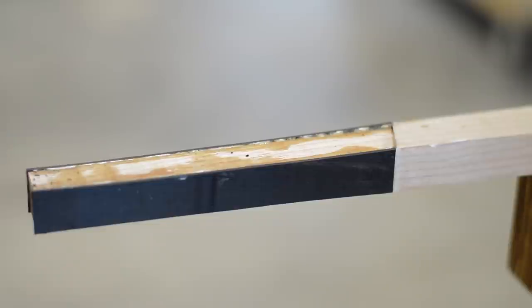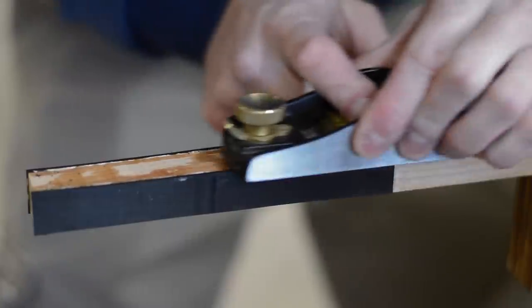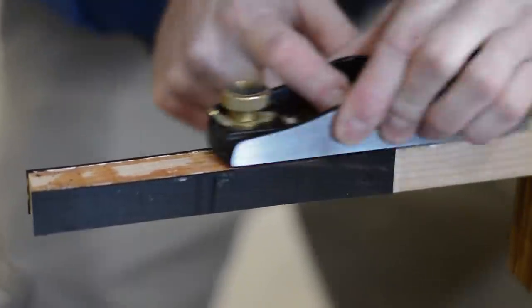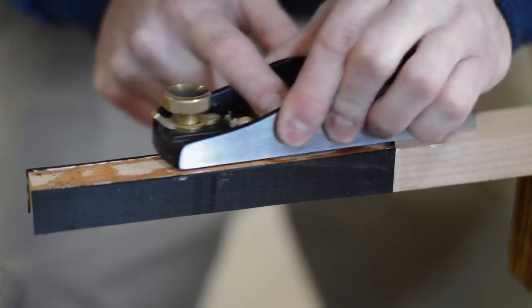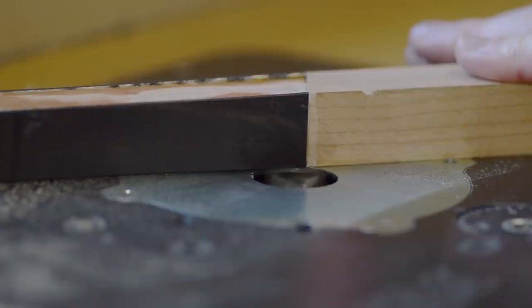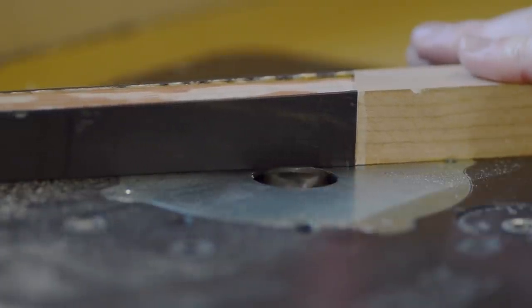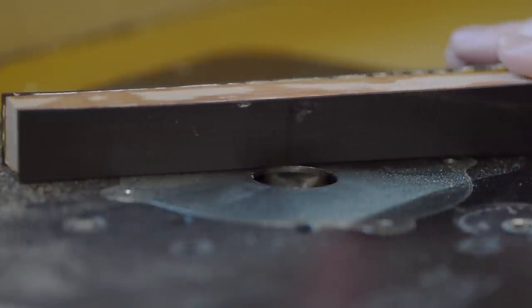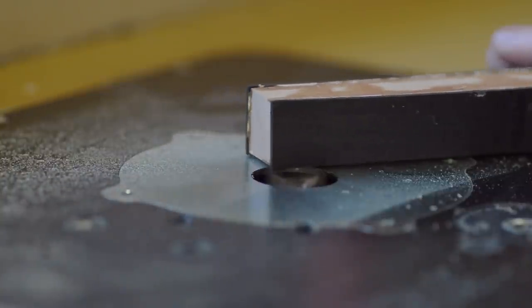So I'm going to trim the excess using the same router table technique that I used earlier. To do this, it's important that those veneers not be sticking up at all past the surface of the leg. Thin veneers, and especially ebony, have a tendency to chip out, so when trimming this I take a couple of light passes.